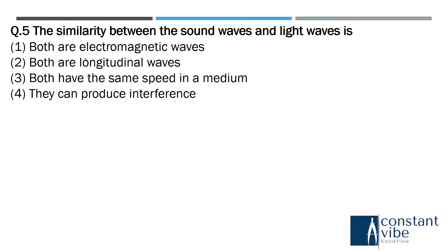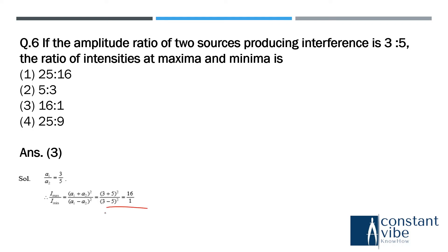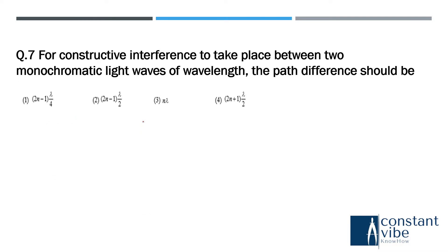Next question: what are the similarities between sound waves and light waves? The answer is option four — they can both produce interference. Next question: if the amplitude ratio of two sources producing interference is 3 to 5, the ratio of intensities at the maxima and minima is 16 to 4. Using the equation I_max / I_min with amplitudes a₁ and a₂, you can find the value is 16 to 1.